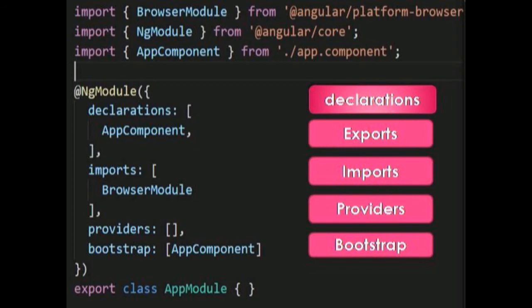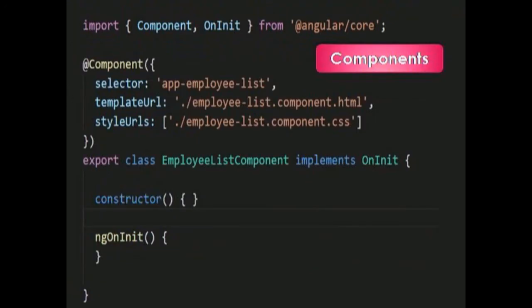The next building block is Component. A component is simply a class with a template that deals with the view, and it contains the core logic for the page. We write the application logic in the component class, which is then used by the view. We can say it is simply a controller in Angular 1.x.